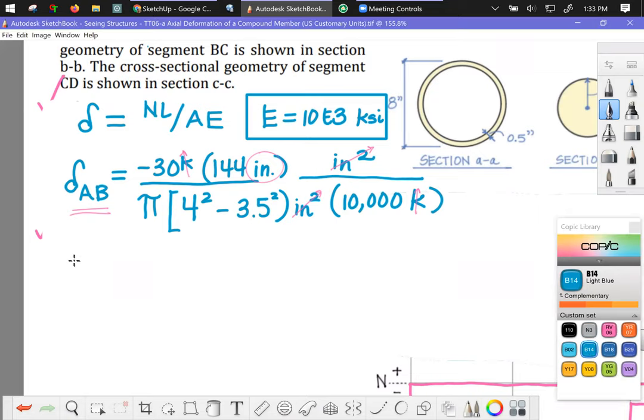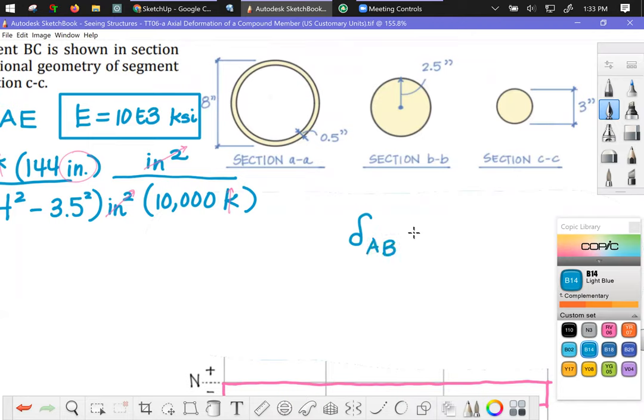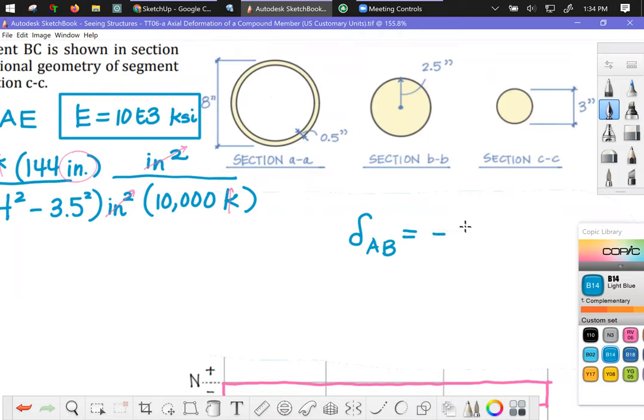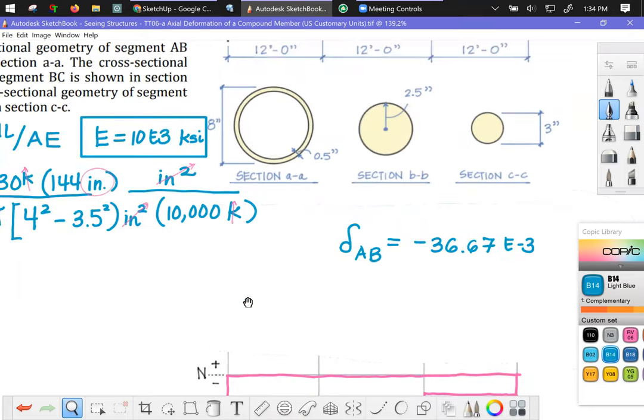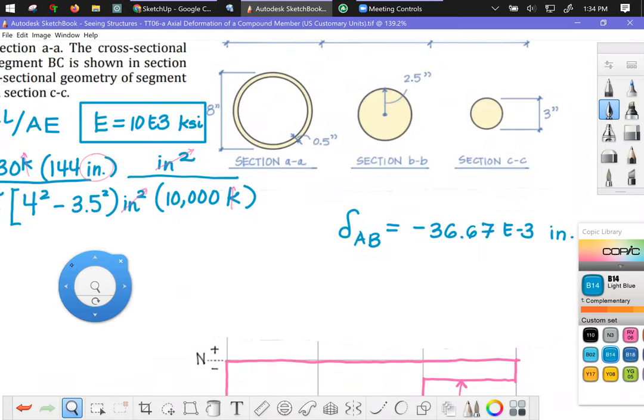This answer, so the deformation, I'm going to put my results here. What you need to put here is a negative sign for a shortening of member AB. The magnitude is 36.67 E minus three inches of length. So it's shortening ever so slightly, just a fraction of an inch shortening.